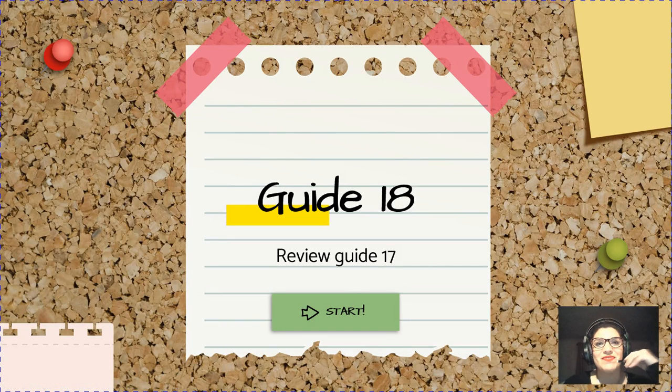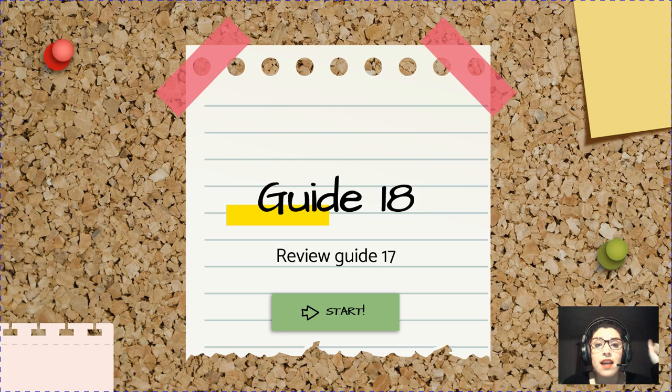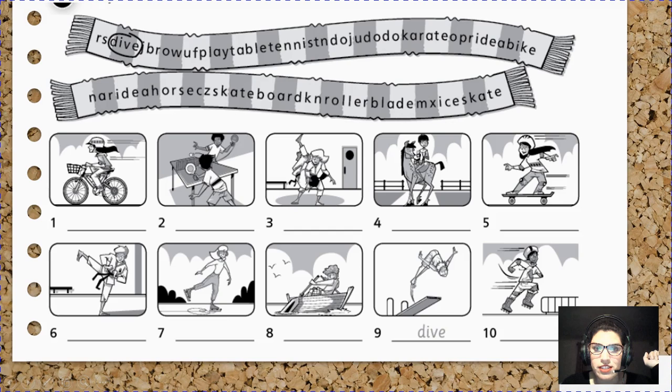Hello everybody, how are you today? We are here to work on guide number 18 and review guide number 17. Okay, are you ready? Let's start. We are going to start by reviewing guide number 17. In this activity you have to circle the name of the sports and then you have to write the name of the sports.